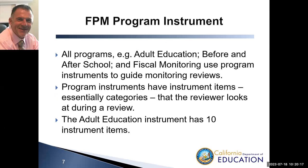All programs — whether adult ed, before and after school, or fiscal monitoring — develop program instruments to guide monitoring reviews. Within those instruments are categories or items that the reviewer looks at during each review. The adult education instrument has 10 items or categories, which Abby and I are going to review with you today.